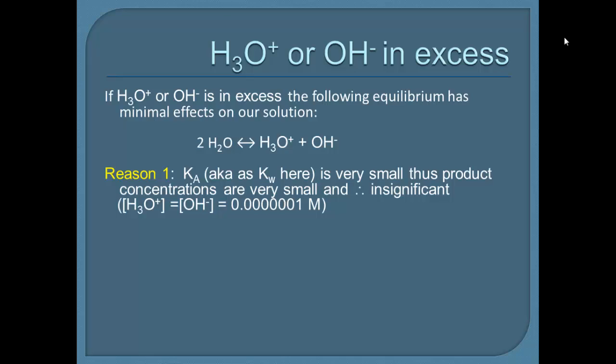So first of all, if we look at the Ka value, also known as Kw, this value is very small. So that means the product concentration, because remember, any Keq is products over reactants. We have a very, very small amount of H3O+ and OH-. So, because these concentrations are so small, they are insignificant. Remember, it's 0.00001, or 10 to the power of negative 7 concentration for H3O+ or OH-.